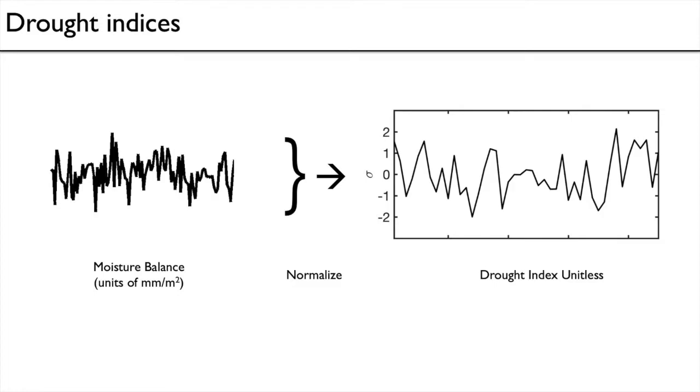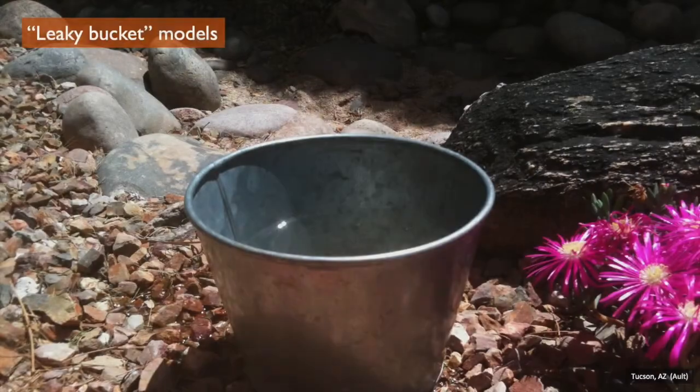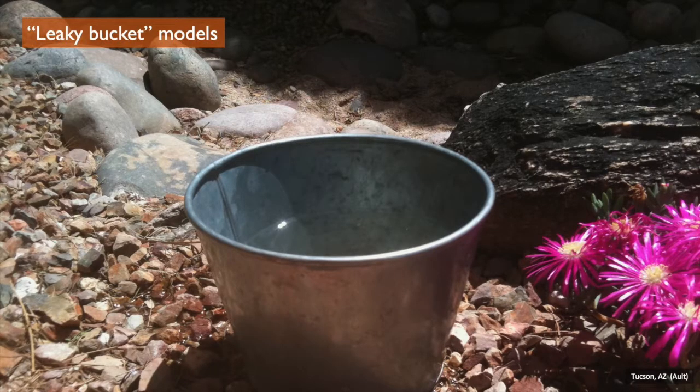When we move now to look at leaky bucket models, we're really focused just on the quantity of soil moisture itself. And of course, because soils vary across space and climates vary across space, the value we're talking about, the quantity we're talking about, is going to have units of either kilograms per kilogram of soil or millimeters of moisture per unit of soil.